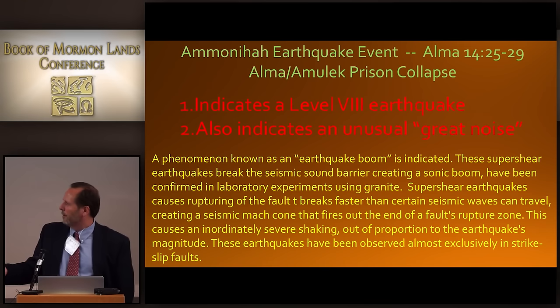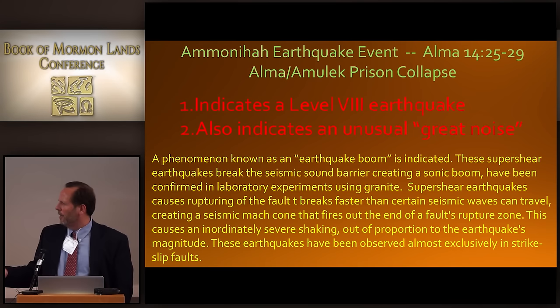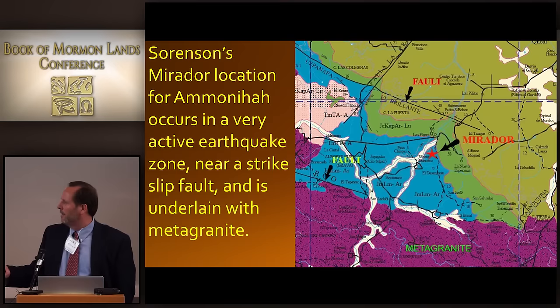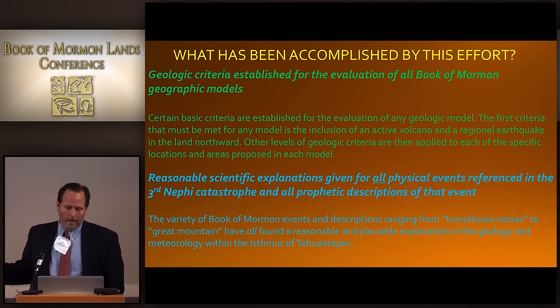The Ammonihah event — the way they described it was a level VIII earthquake. They had an unusual great noise, which Kirk and I have argued about. There's a phenomenon most people aren't aware of called an earthquake boom — you can get sonic booms off certain types of earthquakes called super shear earthquakes. They only occur in certain environments. Laying in what Sorenson had, the parameters require a strike-slip zone — which it is — and being underlain by granite or occurring in granite. There is actually a metagranite underneath that extends in this area. So you actually have the conditions for a super shear earthquake that could occur there.